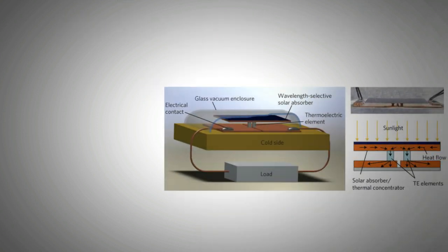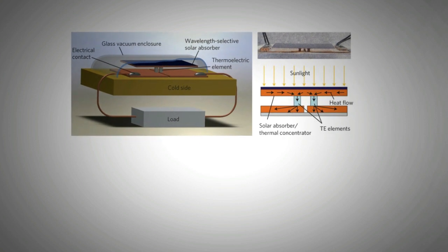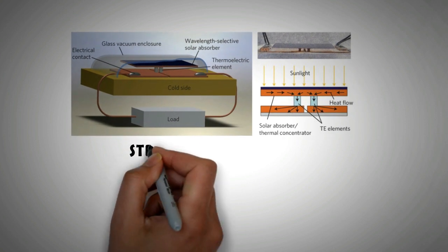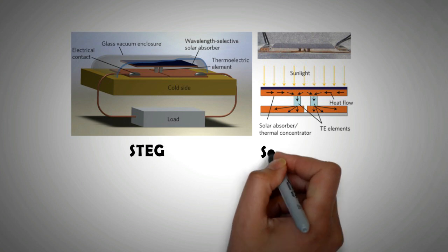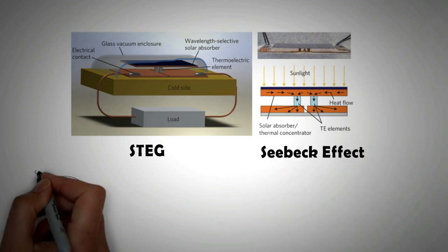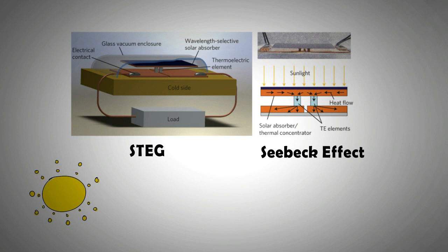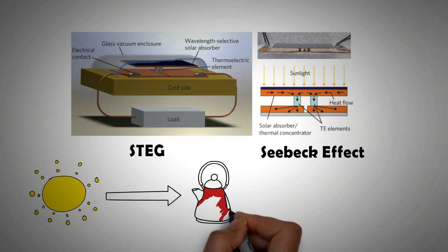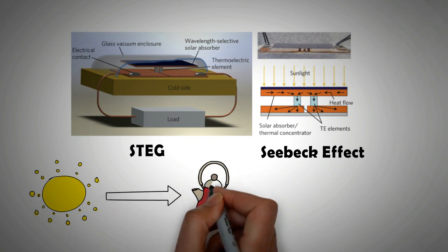A promising new technology is emerging in the renewable energy portfolio that uses the sun's heat to produce electricity. The product is called a Solar Thermoelectric Generator or STEG in short and uses the Seebeck effect for heat to electricity conversion.